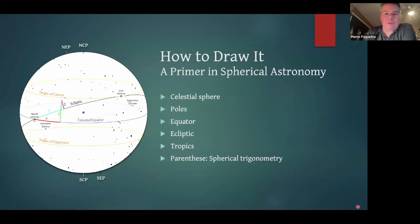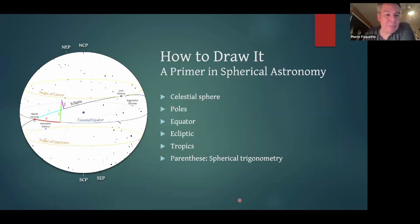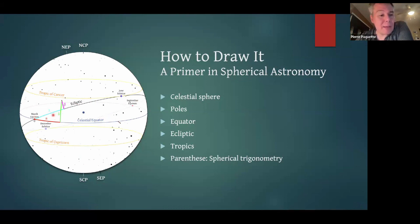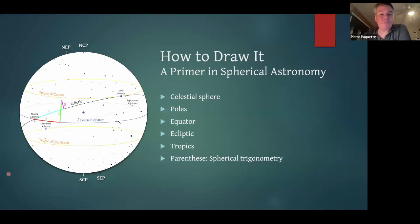Now, how to draw it — first a very quick primer on spherical astronomy. We're all familiar with the celestial sphere, the globe around the Earth. It has north and south celestial poles, and I noted also the north and south ecliptic poles. The equator is the projection of Earth's equator in the sky, and the ecliptic is the apparent path of the sun throughout the year. We have the tropic of Cancer — the northernmost point the sun reaches in June — and the tropic of Capricorn — the southernmost point it reaches in December.